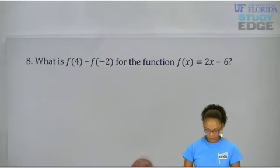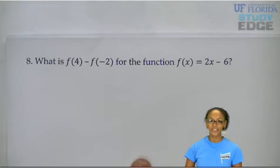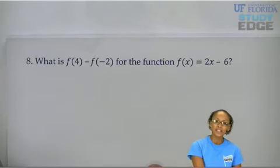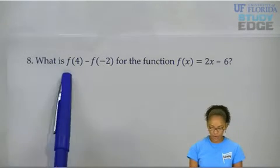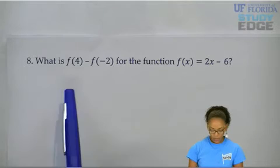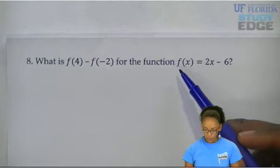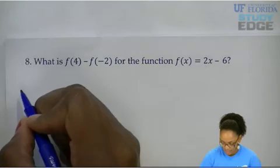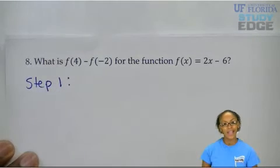Let's take a look at a practice problem. What is f(4) minus f(-2) for the function f(x) equals 2x minus 6? Now, do you remember how we solve an equation like this? First off, how do we even solve f(4)? We plug in 4 every time we see x. What f(4) is saying, we want f(x) such that x is equal to 4. So let's make that step 1. Step 1: find f(4).